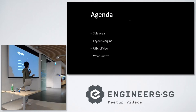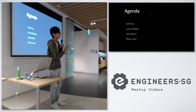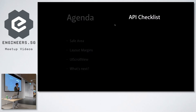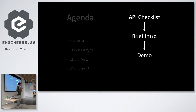So this is going to be our agenda. This presentation is going to be separated into three sections: the safe area, layout margins, and the scroll view review. And perhaps after these three sections, we won't have enough time to talk about some more stuff, so I put them in a list — if you're interested, you can go online and Google it yourself. In order for you to have a clear mental model, I'm going to structure each section into this flow: first, I'll give you an API checklist, then a brief intro, then a demo, followed by the takeaway, and finally a recap of the demo.